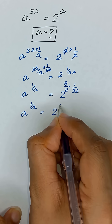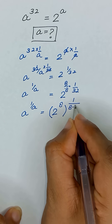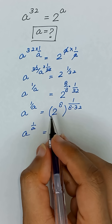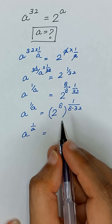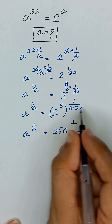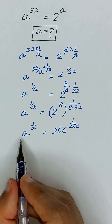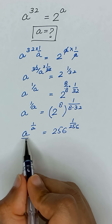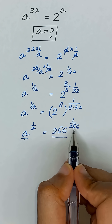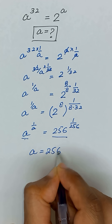So a to the power 1 divided by a equals 2 to the power 8 times 1 divided by 8 times 32. This gives us the exponent 1 divided by a equal to 2 to the power 8, which is 256, and 8 times 32 also equals 256. So we have a to the power 1 divided by a equals 256 to the power 1 divided by 256. Equating both sides, the base a equals 256.